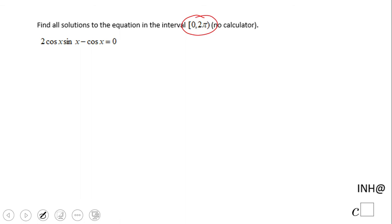That interval is very important to look at, and I say no calculator. The first thing you may want to notice is the fact that this equation is equal to 0, which is good, and also both terms have cosine of x.